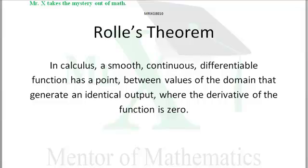Then Rolle's Theorem says that if the function between those two points is smooth and continuous, there has to be a point between those two where the derivative of the function is zero.